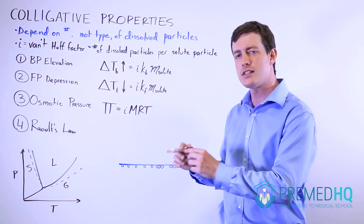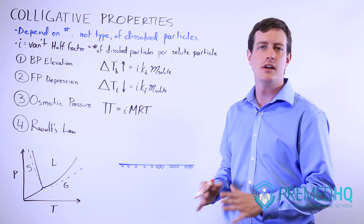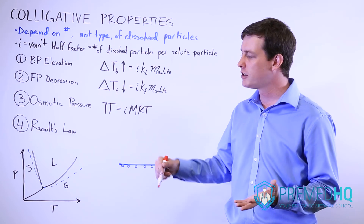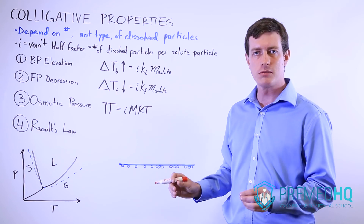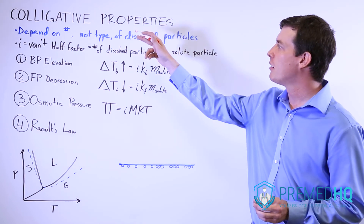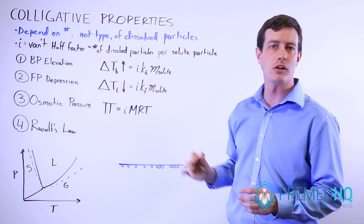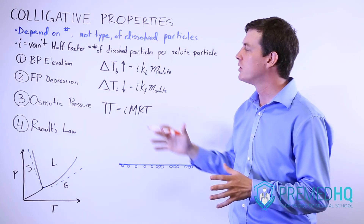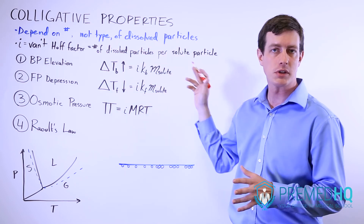With NaCl, you put in one particle and end up getting two different dissolved particles. Since colligative properties care about the number rather than any other qualities of the dissolved particles, it's very important to realize how the Van't Hoff factor interacts with these.